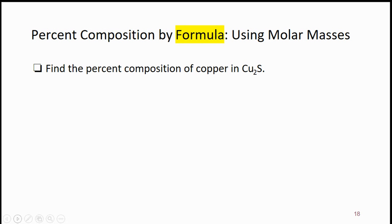Now we're going to continue the percent composition problems. This question is titled percent composition by formula, which means the formula is given to you. The formula of copper sulfide is given to you, and you're going to use the molar masses, which you find on the periodic table, in order to do the calculations here.